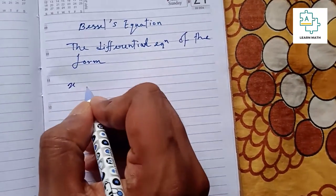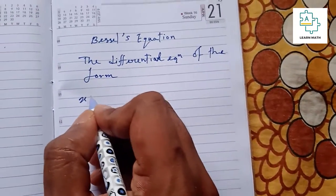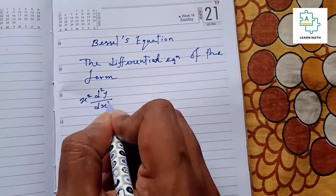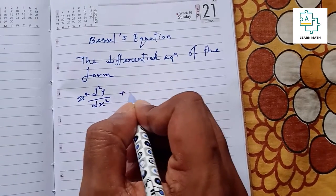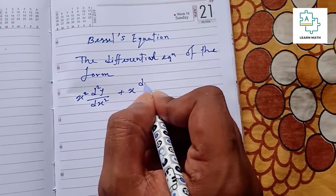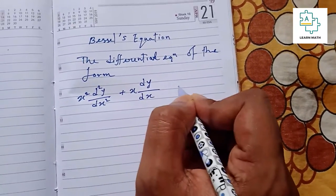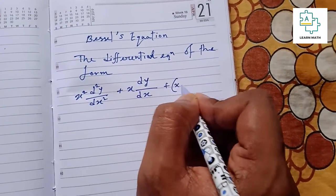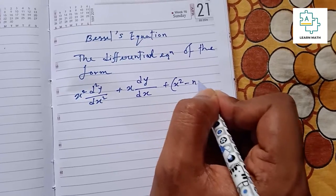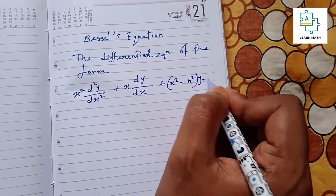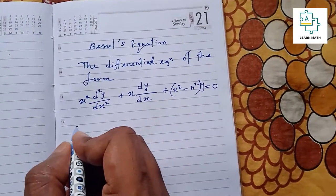x squared d²y/dx² plus x dy/dx plus (x² - n²)y equals 0, or